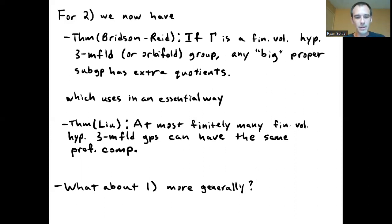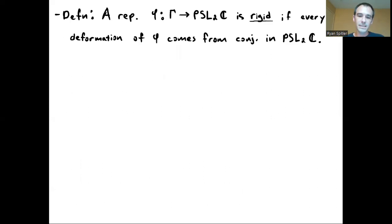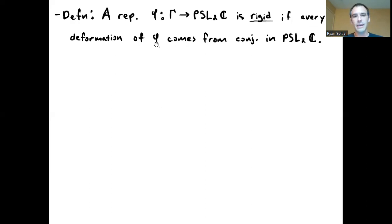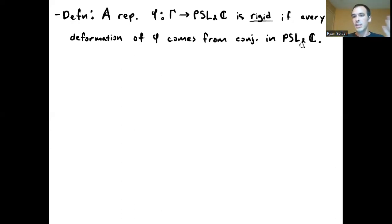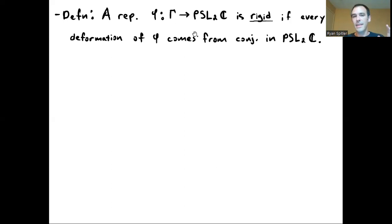That's what my main result is about. To set up the statement, I'll give a couple of definitions. The first definition: if we have a representation Phi from Gamma to PSL₂C, we'll say that this representation is rigid if every deformation of Phi comes from conjugation in PSL₂C. The idea is that if I have some particular representation to PSL₂C, the only way to wiggle it is by conjugating with various matrices from PSL₂C.